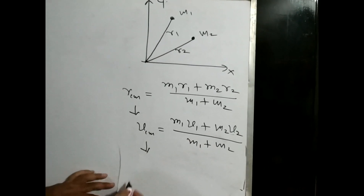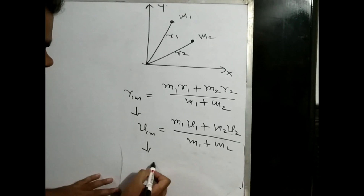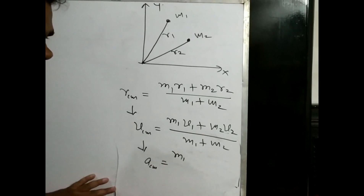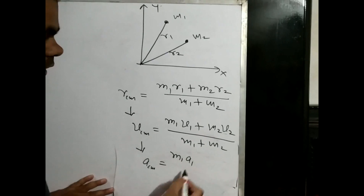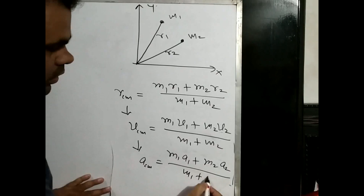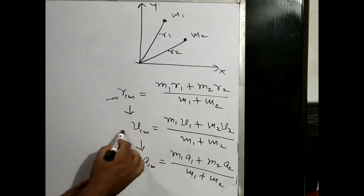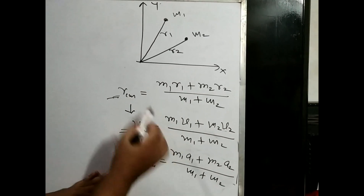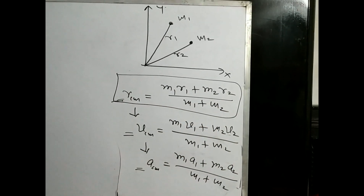Similarly, agar isko ek baar aur differentiate kar lein, to dv by dt kya hoga - dv by dt is called the acceleration. To yahan par yeh center of mass ka acceleration hoga. m1 constant the, outside, aur v1 ko dv1 by dt likhenge, to this is called a1, acceleration. Plus m2 a2 upon m1 plus m2. Ab yahan par dekha, humne position vector of center of mass, velocity of center of mass, and acceleration of center of mass nikala. Generally 90% questions mein position vector poocha jata hai, velocity or acceleration of center of mass ee rare case mein poocha jayega.